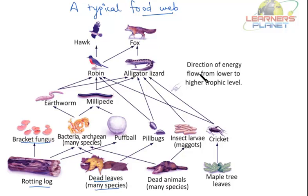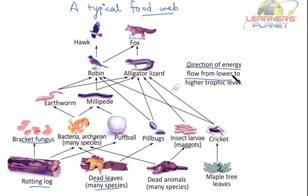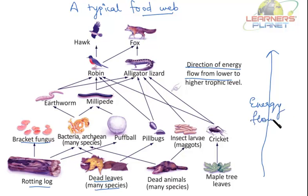We humans can consume animals like goat, cow, or fish. The direction of energy flow here is from lower to higher trophic level. Remember that energy flows from lower to higher trophic level. Trees in forests are sources for many such animals, and many such animals are food for human beings — that is how the cycle works.